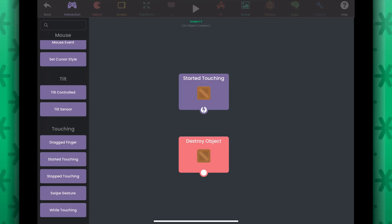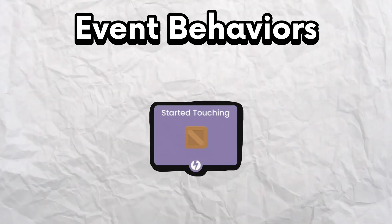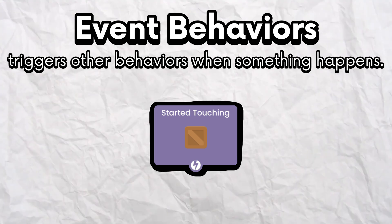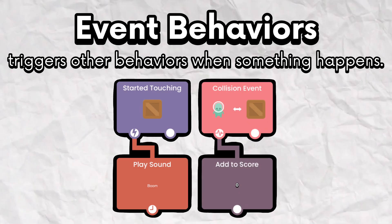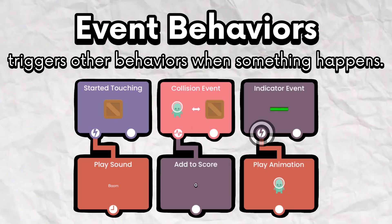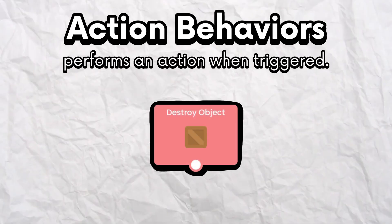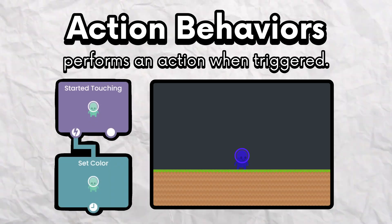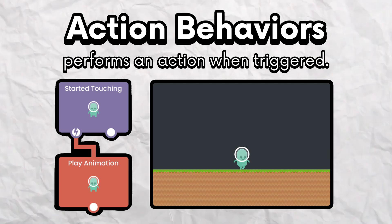You can connect behaviors by dragging from a connector to another behavior. Behaviors can be connected in any way to achieve whatever you're going for. Event behaviors trigger other behaviors when something happens, like when you start touching an object, or while an object collides with another object, or when the progress of a health bar changes. Action behaviors do something when they are triggered, such as changing the color of an object, moving the screen, or playing an animation on a graphic.